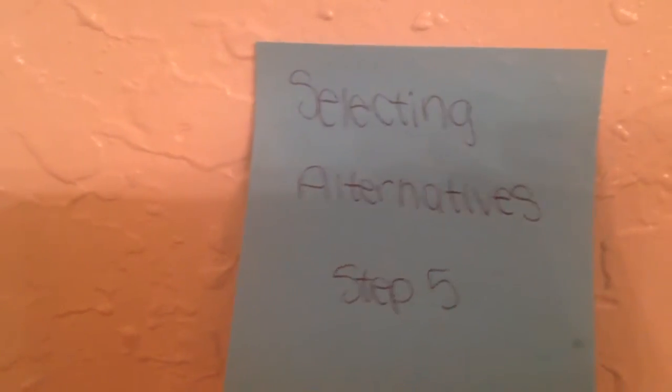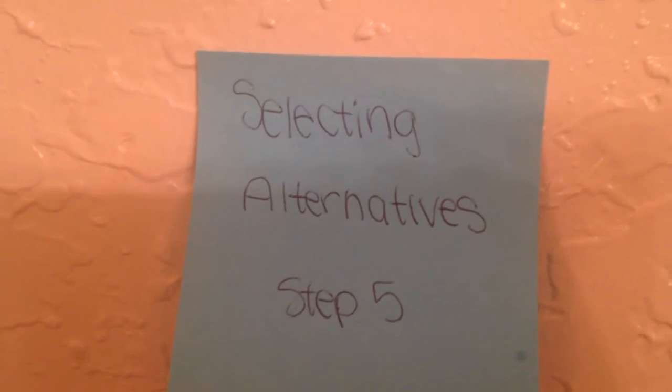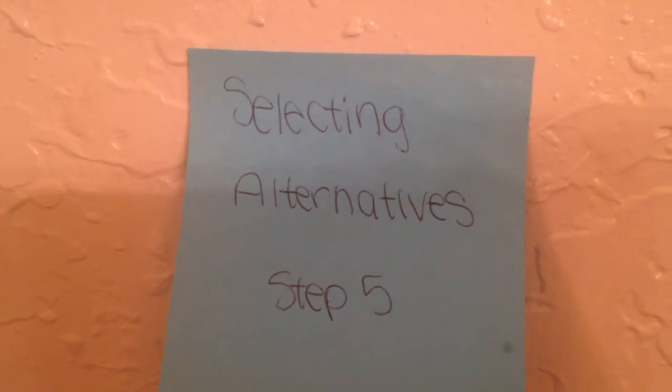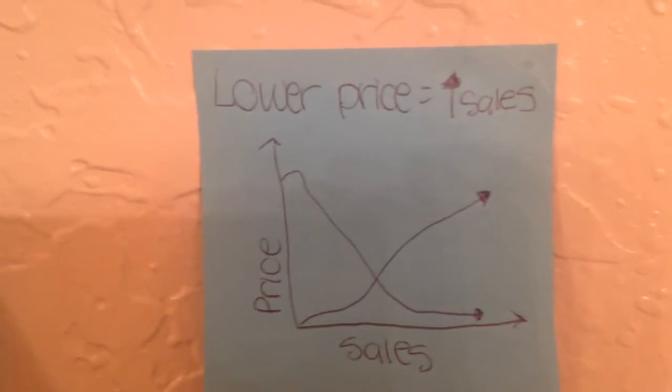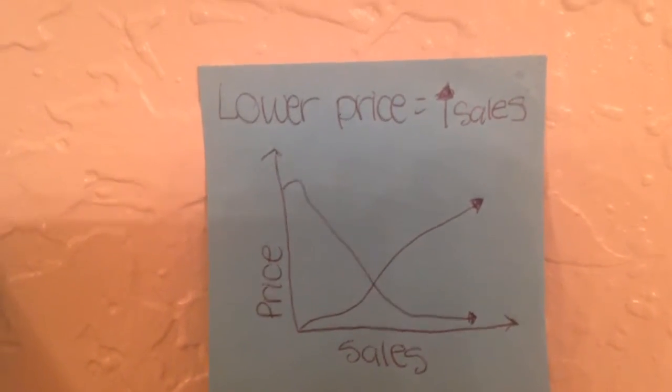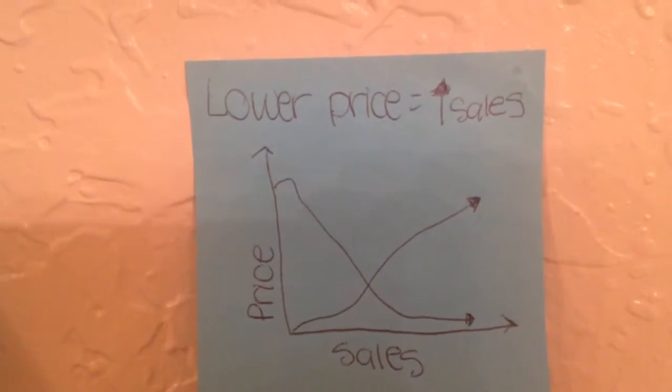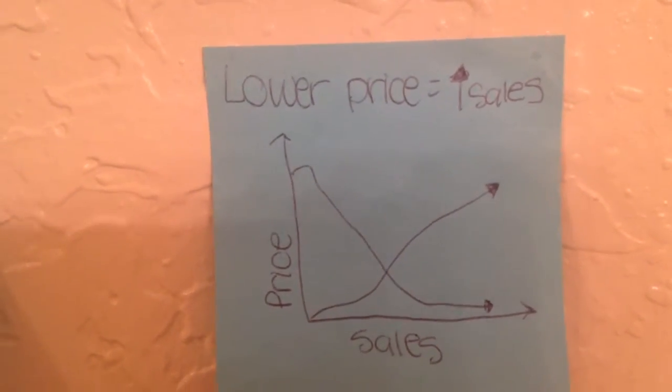Step five: selecting alternatives. The team meets and decides to lower prices in order to increase sales.